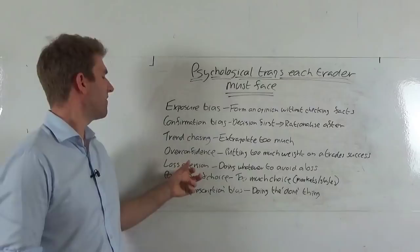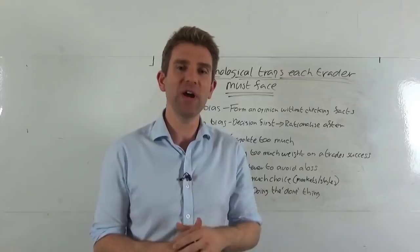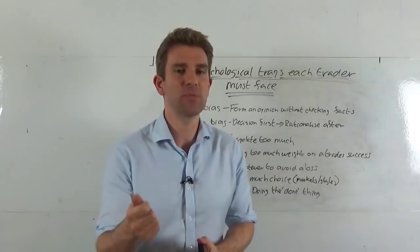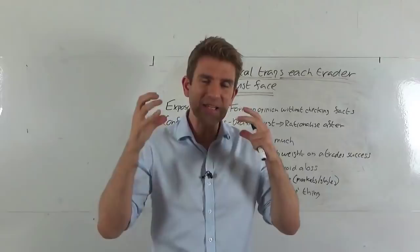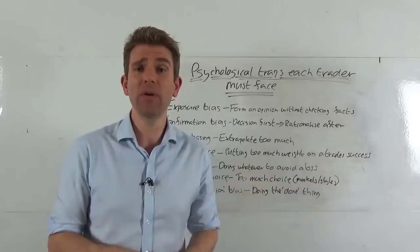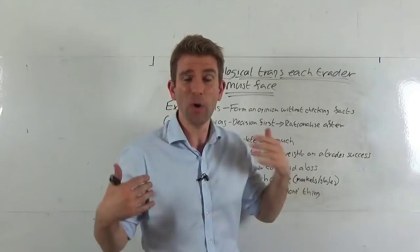Right, we've got number five, loss aversion. So loss aversion is quite a common one with traders, believe it or not. And it's doing whatever you need to do to avoid a loss. I've just got to get back to break even. I just want to make sure I make money today. I just want to make sure, you know, and it's avoiding the loss as opposed to trading for the best gains possible. A good example is going to be, hey, bringing a stop up to break even because you want to avoid a loss. In reality, you probably need to give this thing a little bit more room. It's hardly even gone in your direction.